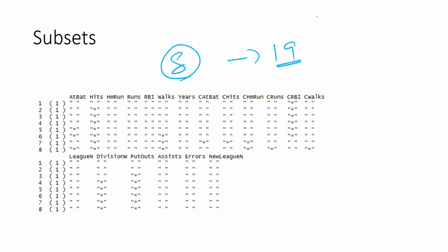When k equals 1 — a one-variable model — you will have 8 different models, each with one of these variables in place. Out of these 8, the best model uses CRBI. So when k equals 1, you have the best model with CRBI. Your salary is best predicted as a function of CRBI, which is one of the predictors or features.